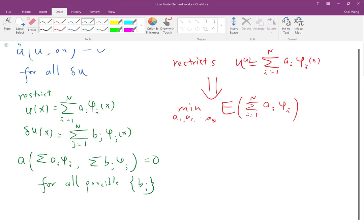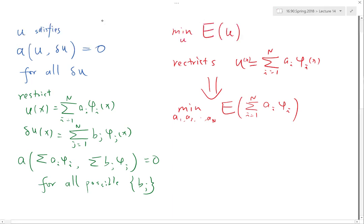Or you can also derive these equations from here by taking a small perturbation to these a_i's. And the small perturbation to these a_i's are actually these b_j's. So basically, if you take derivative of this E with respect to each of these a_i's, you actually get these equations. So this is kind of in general how finite elements works in both approaches, in the weak form and in the energy minimization form.